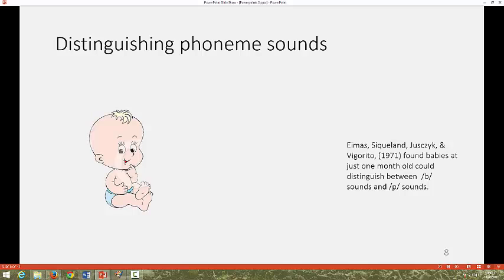Peter Eimas and his colleagues found that even babies that were just one month old were able to make the distinction between different phonemes that they heard. Babies from one month onward could, for example, distinguish between a b sound and a p sound. Have a go at making these sounds for yourself. What's the difference?